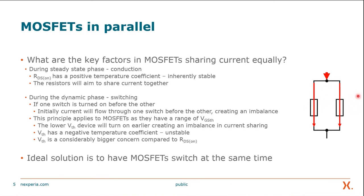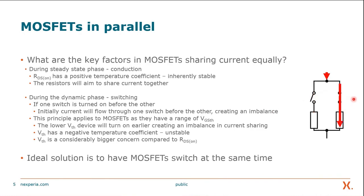Let's simplify this to a switch and a resistor. If one switch is turned on before the other, all the initial current will go through that switching resistor and not through the other one, because that's still off. This creates an imbalance. After the second device also turns on they're sharing current, but during that initial turn-on when one MOSFET is on and the other is off, there can be a large imbalance in current. This principle applies to MOSFETs as they have a range of threshold voltages — two MOSFETs will never necessarily have identical threshold voltages, so you run the risk of one turning on before the other.